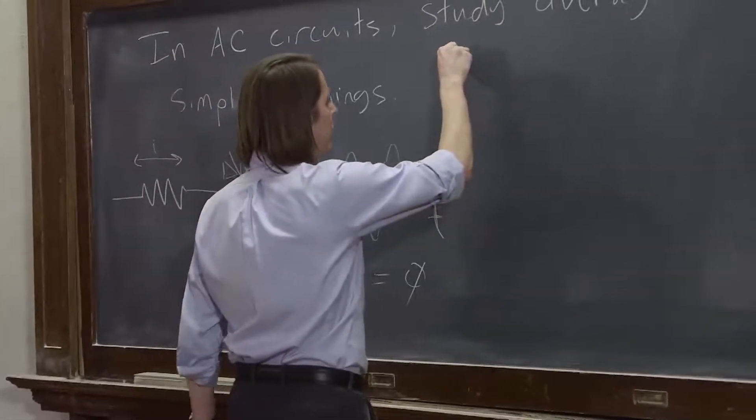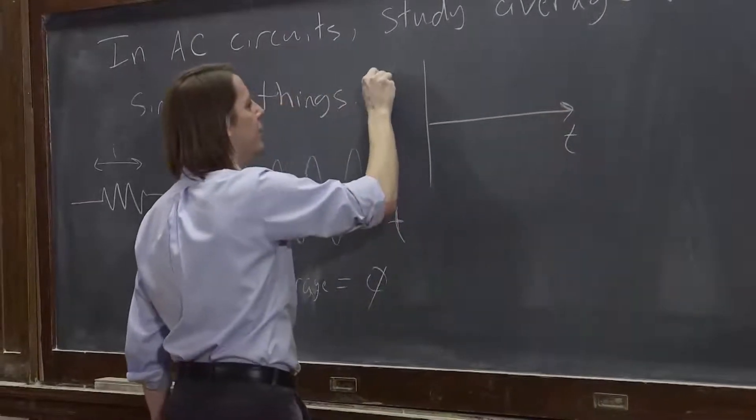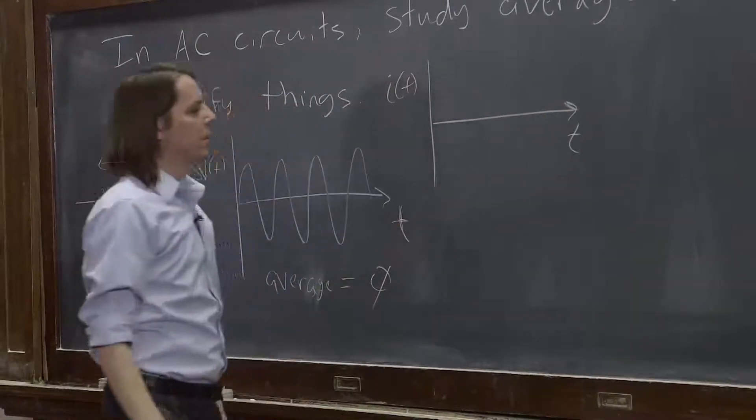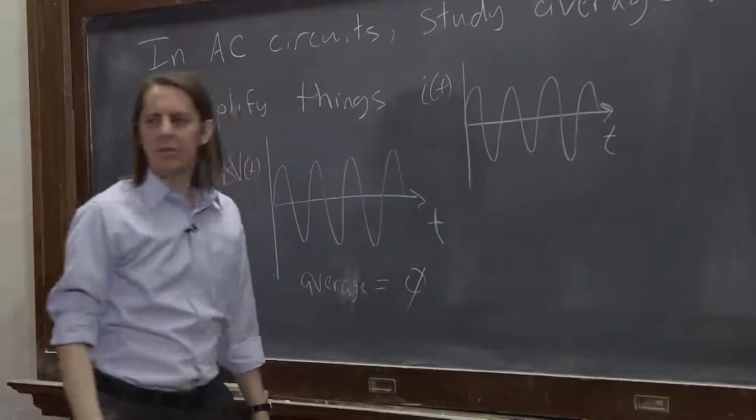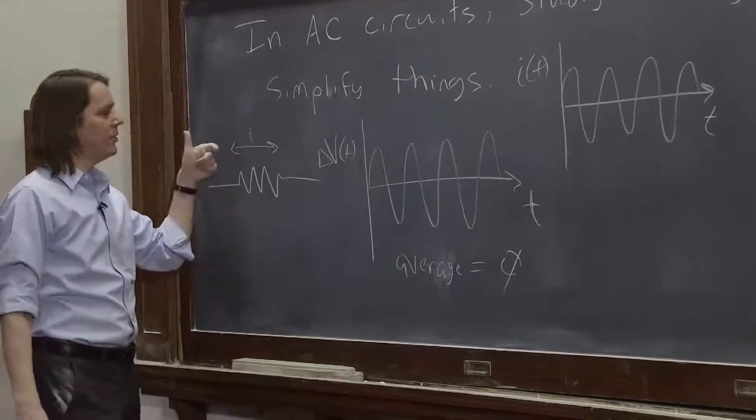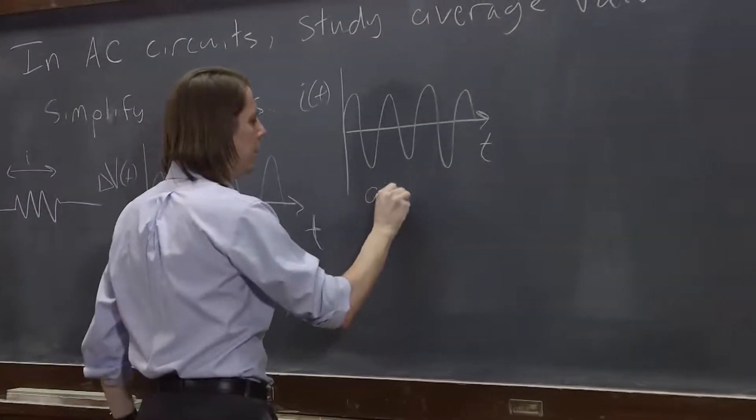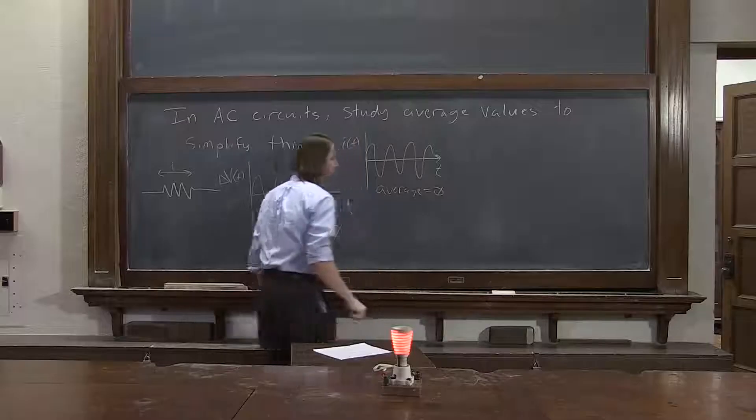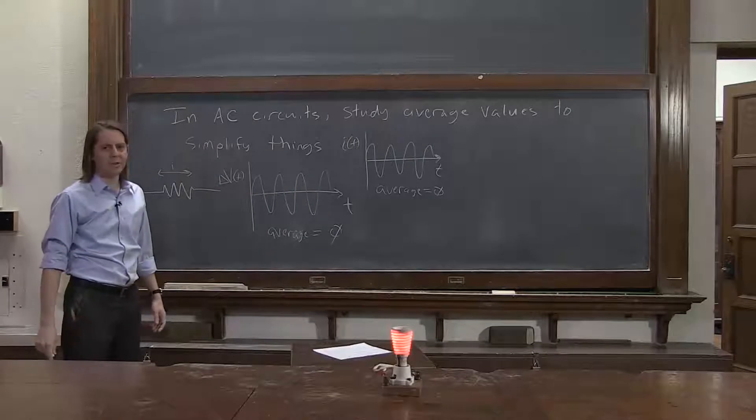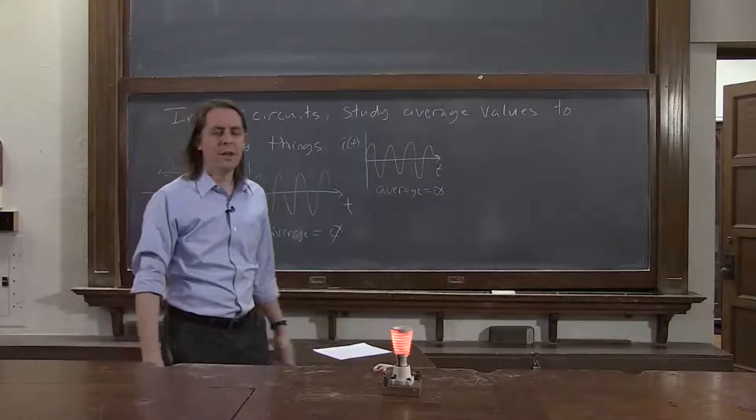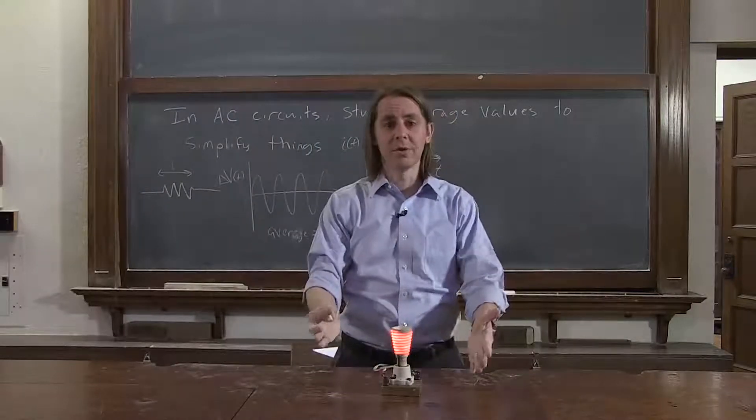We could plot the current versus time. Current versus time, along with the voltage, oscillates. It spends just as much time going this way as it does going that way. It oscillates around zero, so the average is also zero. So that's another case where the average doesn't seem to make a lot of sense. From these two, you'd say, if the average is zero and the average is zero, maybe we can just conclude nothing happens, and we're done with AC circuits.